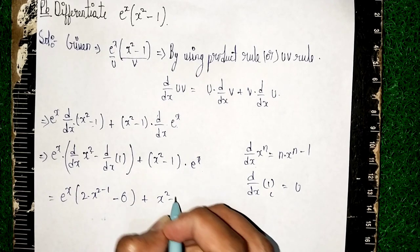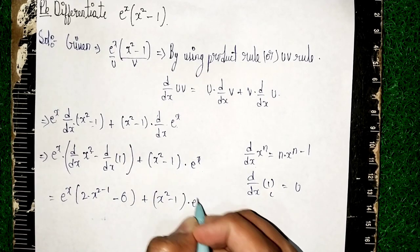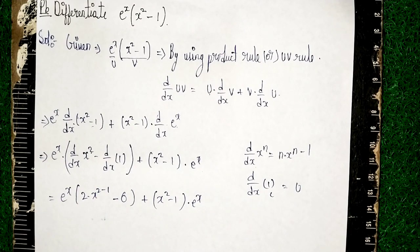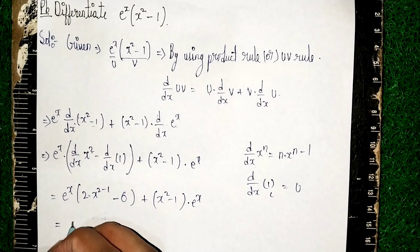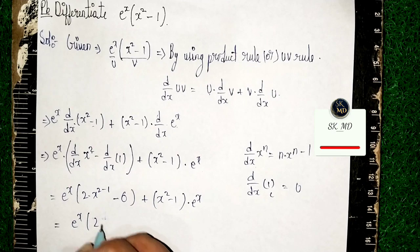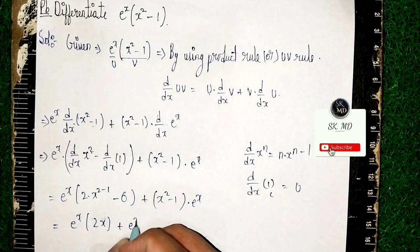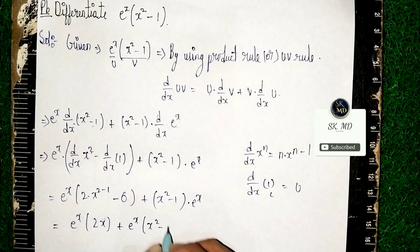Plus x^2 - 1 into e^x. Now what will happen here? e^x into 2x plus e^x into x^2 - 1.